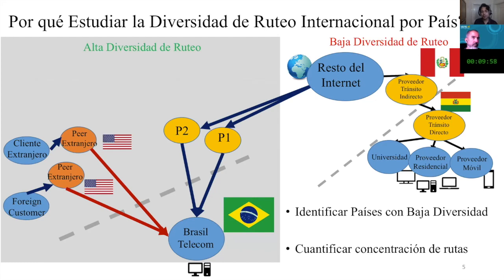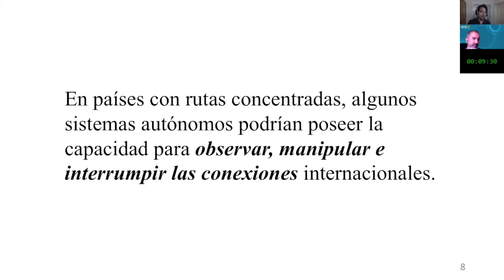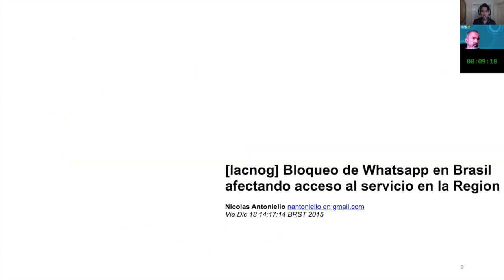In countries like Brazil, we want to quantify how congested the routes are coming from abroad. The result of this concentration is serious. We have evidence that if there is a lack of connection between the two transit providers that connect Bolivia with the rest of the world, users in Bolivia don't have any other mechanism to access content from abroad. So the hypothesis is that countries with concentrated routes could have autonomous systems with the capacity to observe, manipulate, and interrupt international connections.